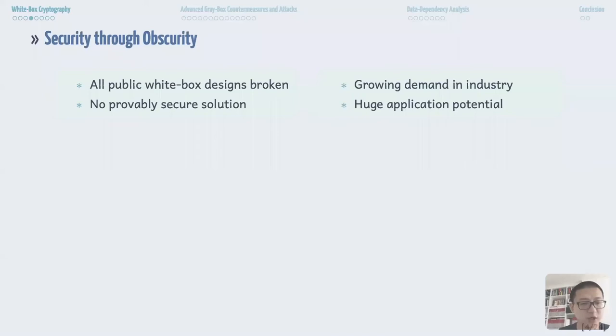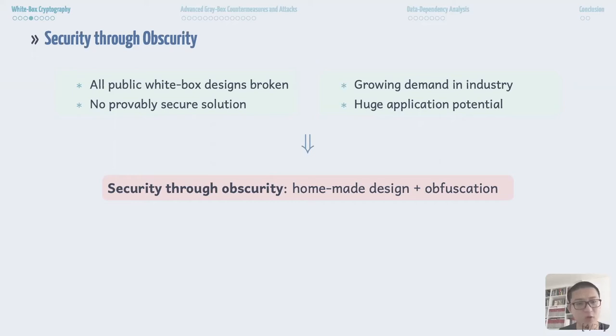Unfortunately, all existing public white box designs in the literature are broken by structural analysis, and we don't have any provably secure solution for any standard cipher. However, the demand of white box crypto from the industry keeps growing and there is a huge application potential for white box crypto. This forces industry to achieve security through obscurity. Namely, they use homemade white box design, then they put a layer of obfuscation to protect their homemade design. The industry hopes this would discourage the attacker by time-consuming reverse engineering and structural analysis.